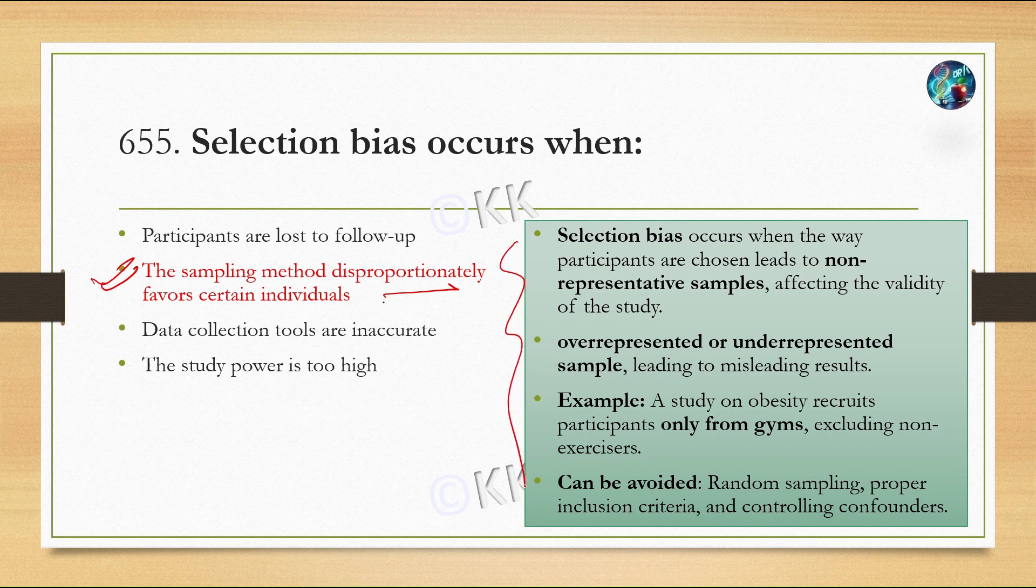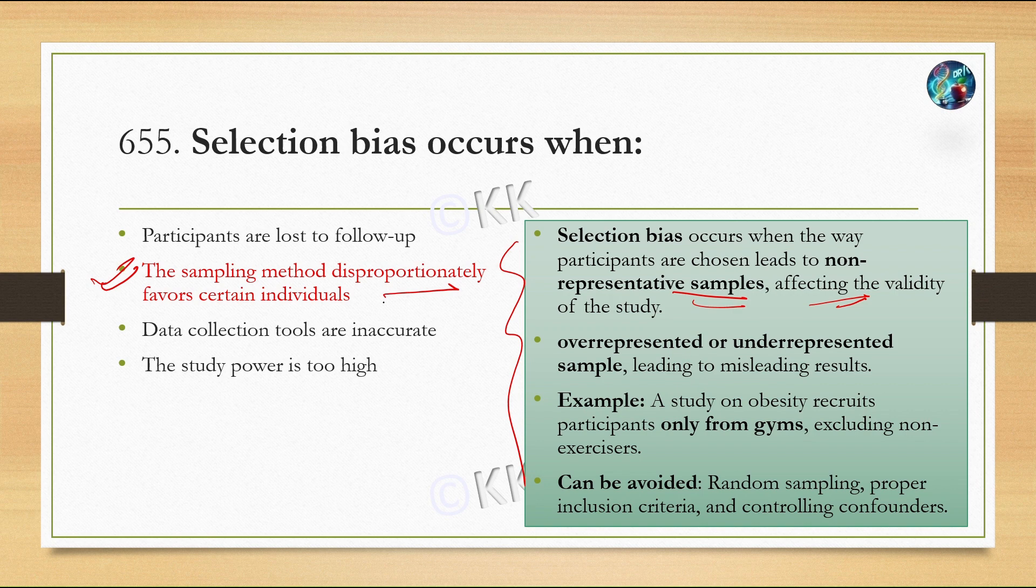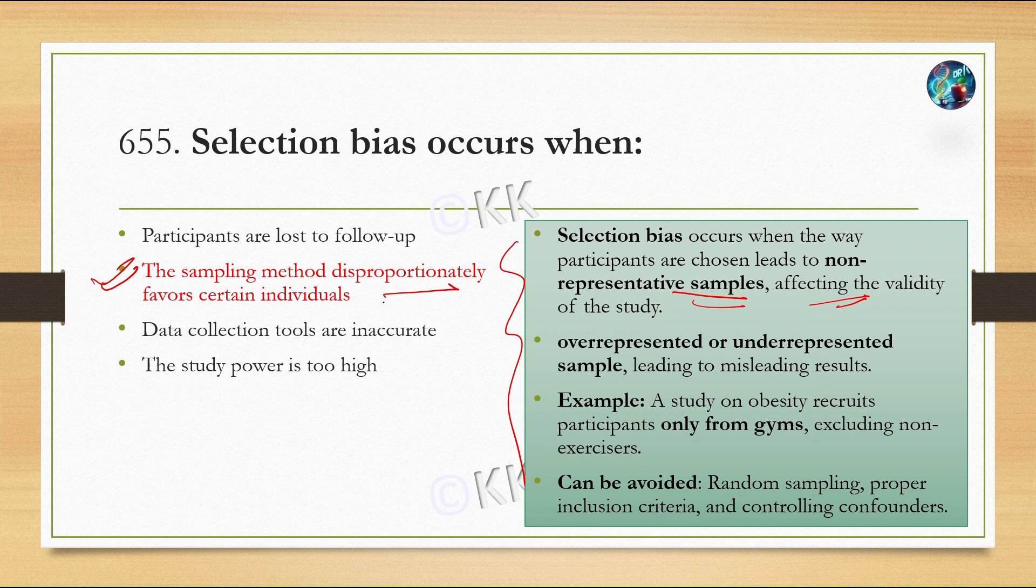Selection bias occurs when the way participants are chosen leads to non-representative samples, affecting the validity of the study. This can result in over-representation or under-representation, providing misleading results. For example, if a study recruits participants for obesity research only from gym members, non-exercisers will be excluded, creating selection bias. This can be avoided through random sampling, proper inclusion criteria, and controlling confounders.